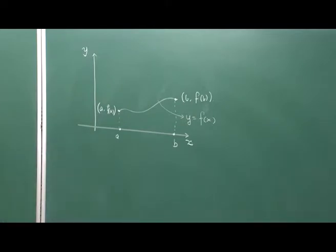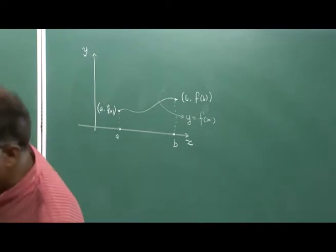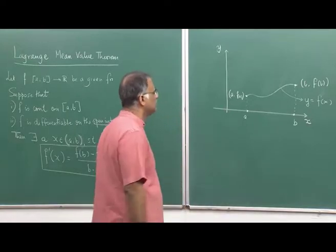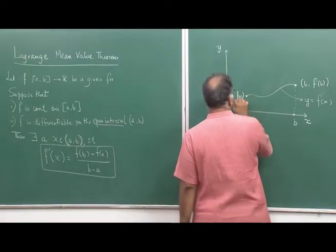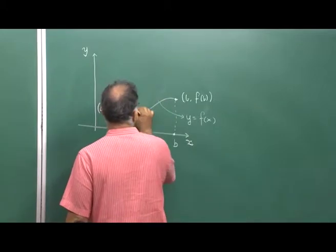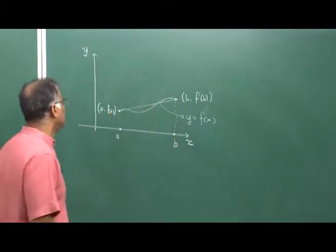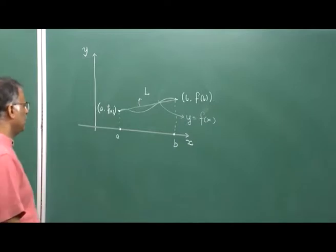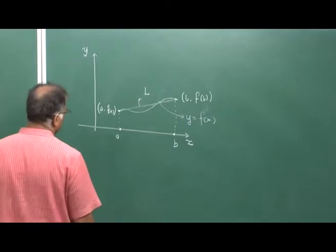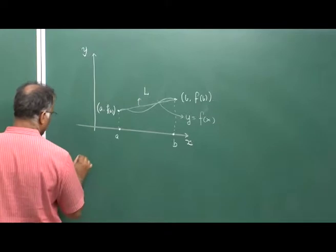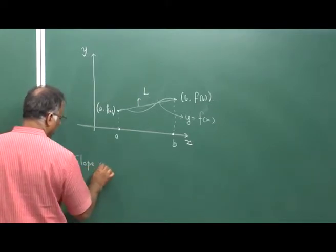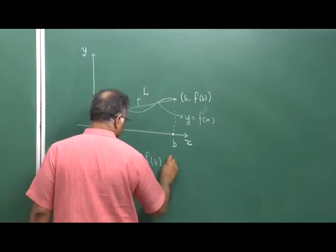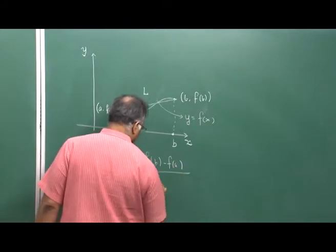If you join (a, f(a)) and (b, f(b)) by a straight line, call this straight line L. Then the slope of L is nothing but [f(b) − f(a)] / [b − a].